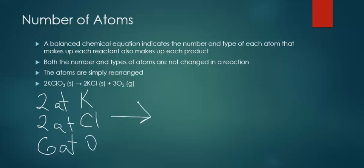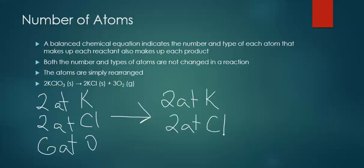On the product side, we have two atoms of potassium, two atoms of chloride, and six atoms of oxygen. So in every chemical reaction, the atoms are conserved — they're the same on both sides of the equation. We are simply rearranging them to form different products.